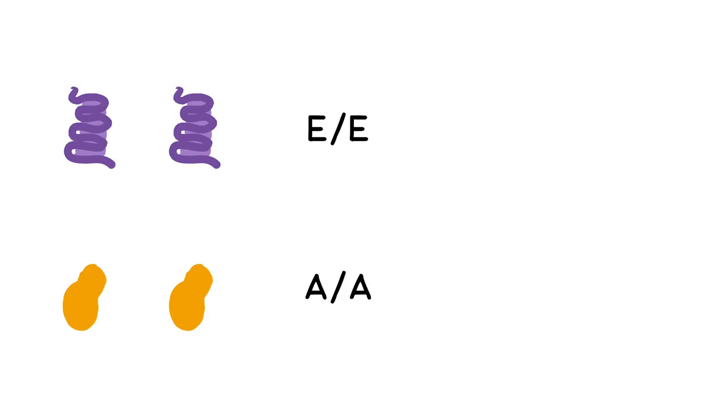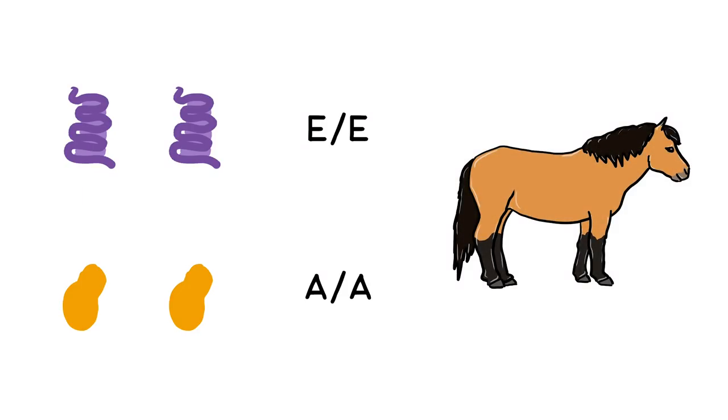It is time to put the two loci together and see what they will produce in a horse. First, let's say we have two good copies of the working MC1R gene and two copies of the working ASIP gene. This will give us a bay horse, just as it should be.